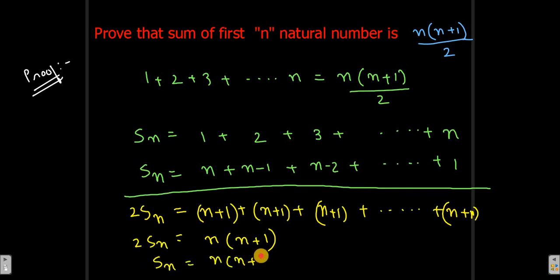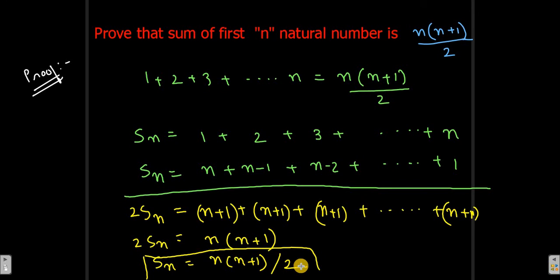Therefore S_n = n(n+1)/2, and that is exactly what we wanted to prove. So the sum of the first n natural numbers is n(n+1)/2, and we have proved it. If you have any doubts, comment below, and thanks for watching.